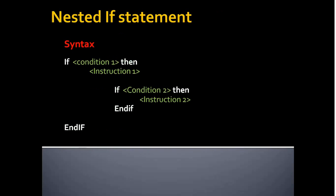The final one is the nested if statement. The nested if statement is similar to the if statement, but in a nested if statement you will find child if statements present inside the parent if statement. First the compiler checks condition 1. If condition 1 is true, then instruction 1 will be executed, and then it checks condition 2. If condition 2 is true, then it executes instruction 2. Otherwise it simply executes instruction 1 and comes out of the nested if statement. Thank you.